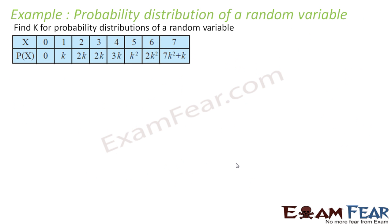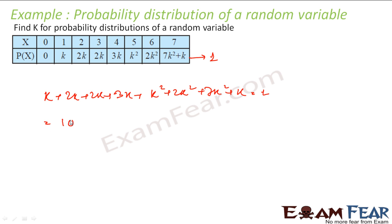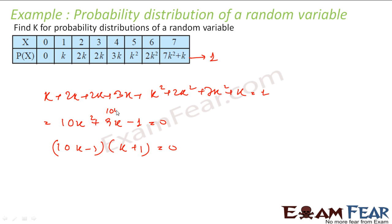Find the value of K for the probability distribution. One thing we know is that the sum of all probabilities must equal 1 for a random variable. Adding all terms: K + 2K + 2K + 3K + K² + 2K² + 7K² + K² gives 10K² + 9K − 1 = 0. Factoring: (10K − 1)(K + 1) = 0. So K = 1 by 10 or K = −1. Since K cannot be negative, K = 1 by 10.